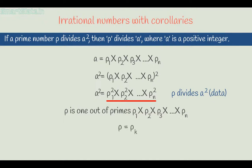Because the statement gives that p divides a squared, let's say p equals pk, where k is a value between 1 and n. So pk divides p1 times p2 times p3 and so on up to pn, which means pk divides a. Hence we have proved the theorem.